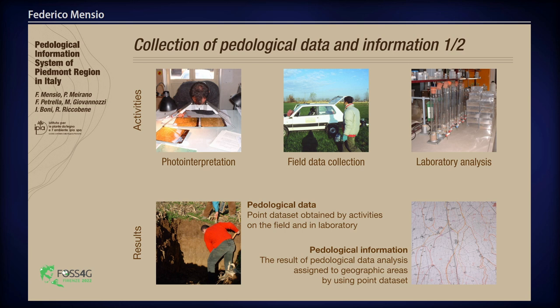What is the process to define pedological data and information? There are three main activities. The first one, made at the office by experts, is photo interpretation with aerial stereophotographs using a stereoscope. The expert draws the base of soil units on a base map using photos. With the maps, the pedologists go to the field to collect data about soil and soil samples. The samples are brought to our laboratory for chemical and physical analysis. The results are, on one hand, the pedological data — a point dataset obtained from field activities and laboratory analysis — and on the other hand, the pedological information, which is the result of pedological data analysis assigned to geographic areas, the soil units, using the point dataset.